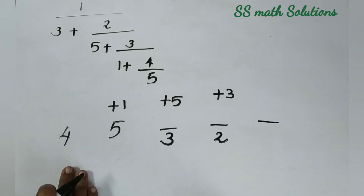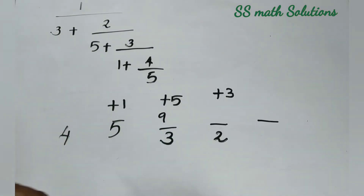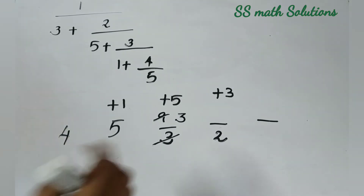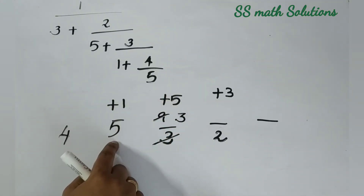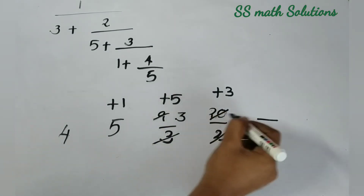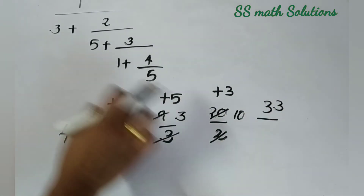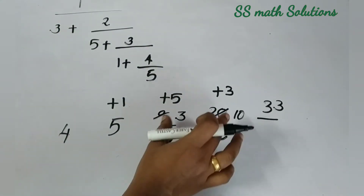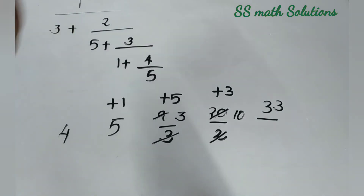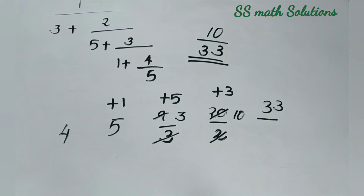Now 5 into 1 is 5, plus 4 is 9. We can cancel 3 and 9 — so 3 threes are 9, giving 3. Then 3 into 5 is 15, plus 5 is 20. We can cancel 20 and 2, giving 10. Then 10 into 3 is 30, plus 3 is 33. We arrange these two numbers as denominators and cancel with our answer to get 33 by 10. But '1 divided by' is there, so our final answer is 10 divided by 33.